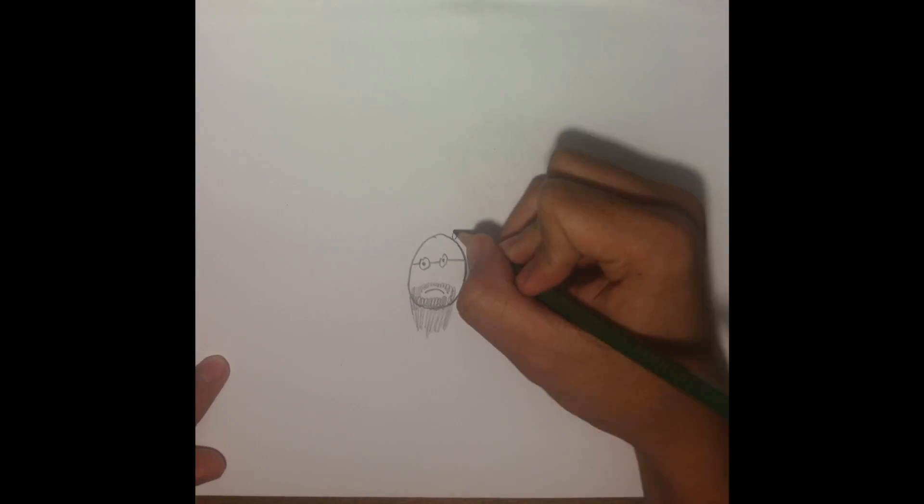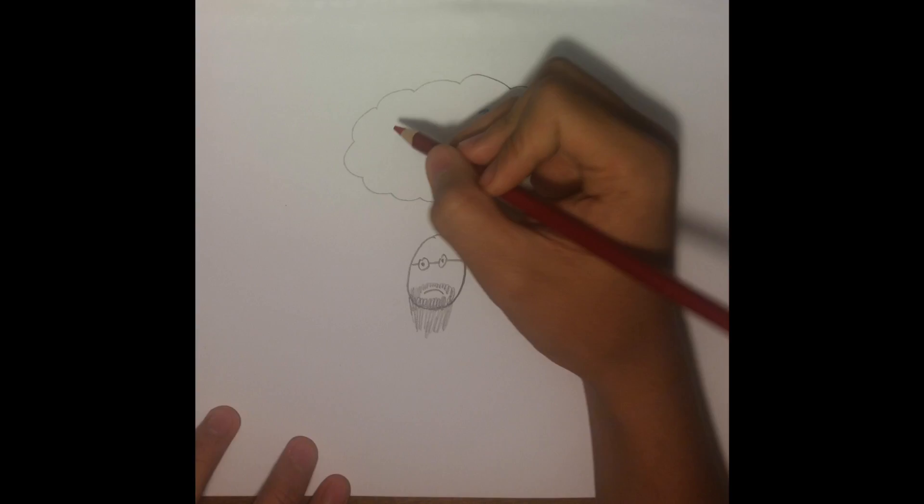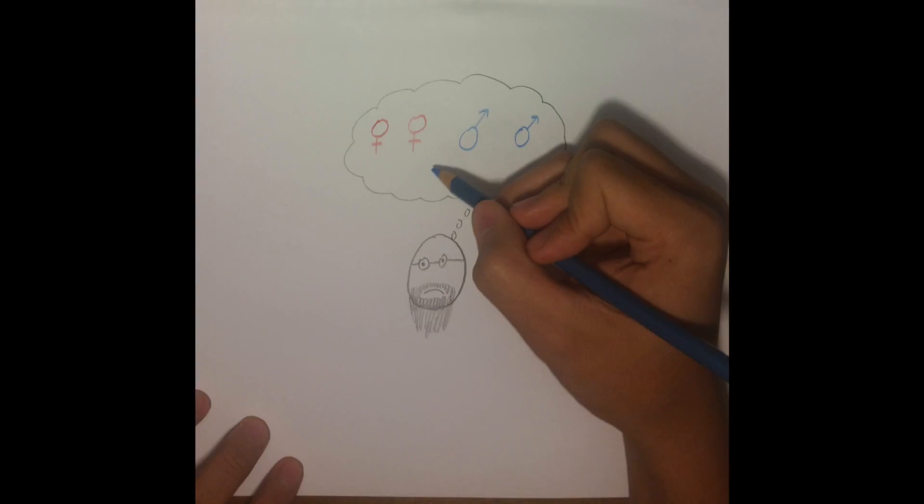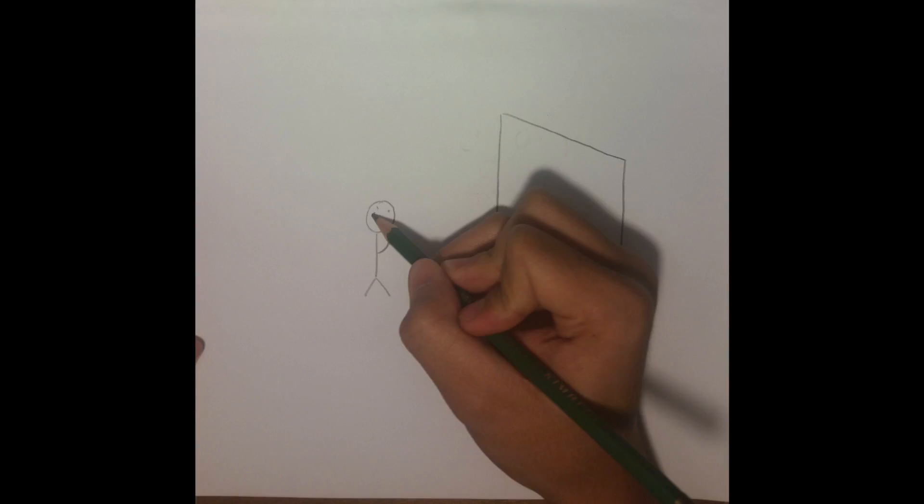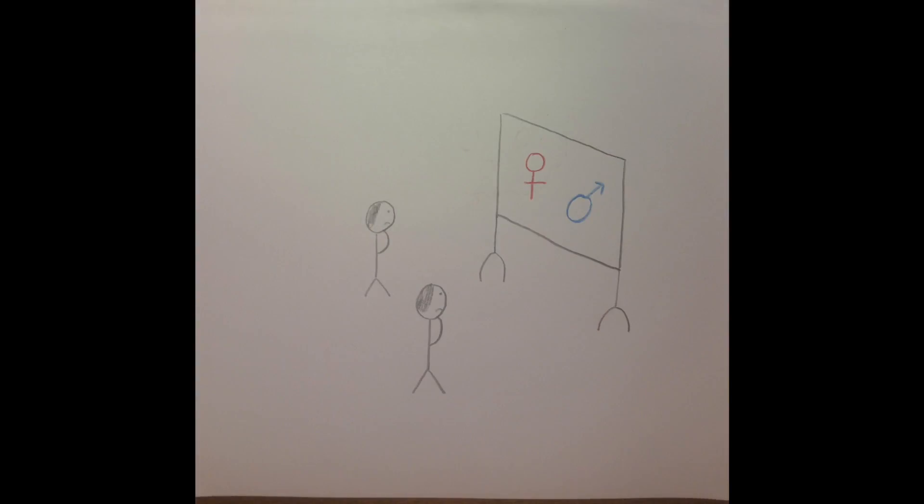In The Descent of Man, Darwin admits to being confounded by how the tendency to produce either an equal amount of females as males or more females than males would be due to natural selection. So, he leaves the problem for future scientists to figure out.